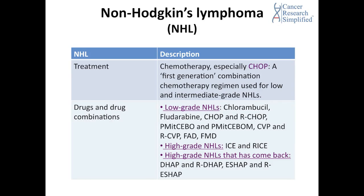Let's talk about treatment types for non-Hodgkin's lymphoma. Chemotherapy, especially CHOP, is a first-generation combination chemotherapy regimen used for low and intermediate grade non-Hodgkin's lymphomas. However, for different types and grades of non-Hodgkin's lymphoma, different types of drugs and drug combinations are also used.